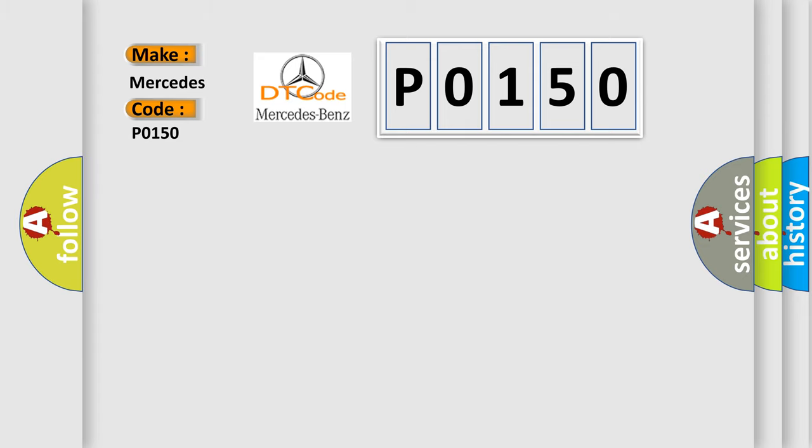The basic definition is: CVM high speed CAN communication bus general failure information no subtype information.